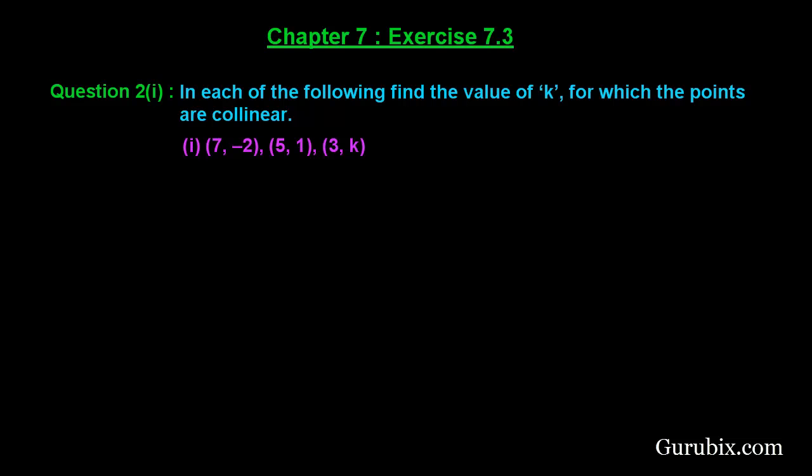Welcome friends. In this video we shall solve the first part of question number 2 of exercise 7.3 of chapter 7. The question says in each of the following find the value of k for which the points are collinear. We are given 3 points and we have to find the value of k. Let us solve this question.